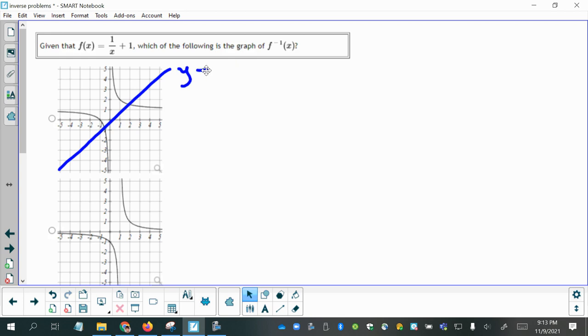Because with inverse functions, all the x's and y's, or you could say the domain and range, switches places from what it was on f of x.